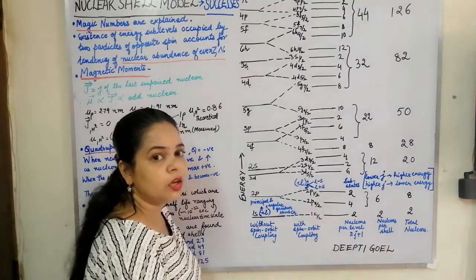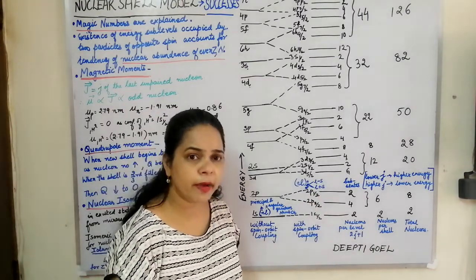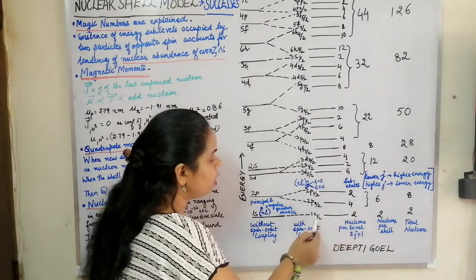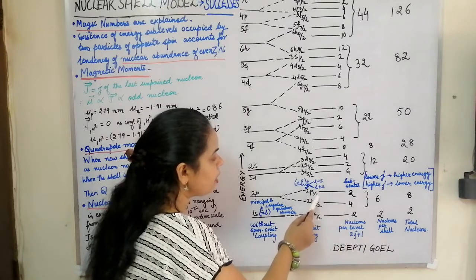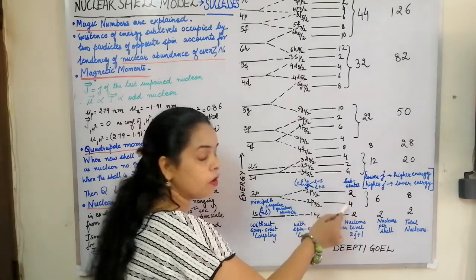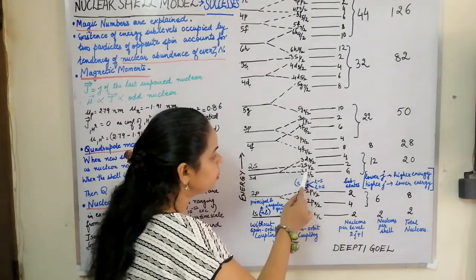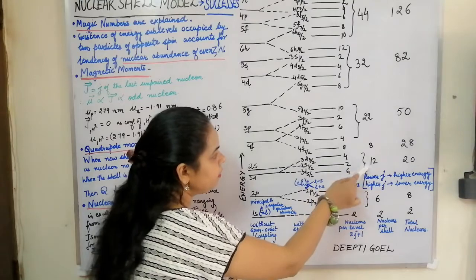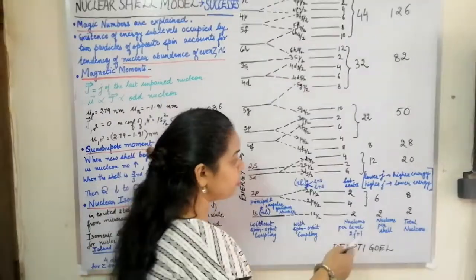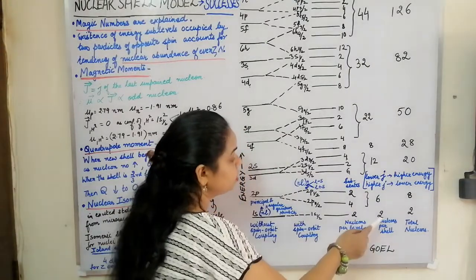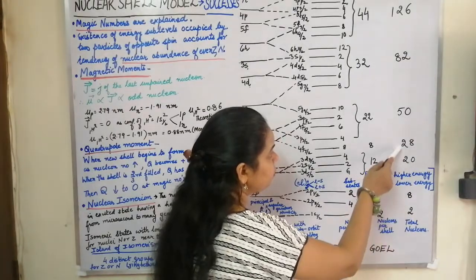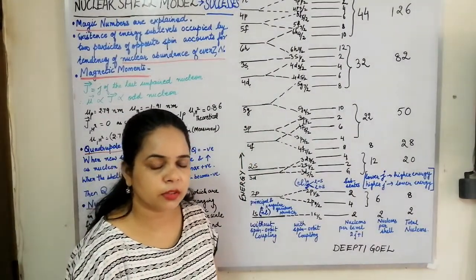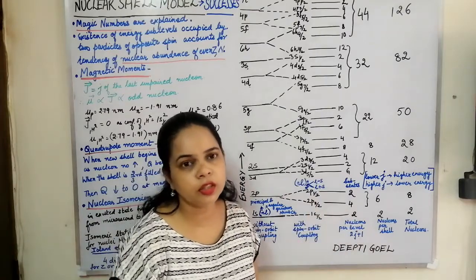Since these states are occupied by two nucleons with opposite spins, the number of nucleons per level is 2J+1, equal to L+1. For S it is 2, for P there will be 4, and for 2P½ there will be 2, so that the P level has a total of 6 nucleons. The D level: 3D 5/2 has 6 and 3D 3/2 has 4, giving a total of 12. The cumulative totals are 2, 8, 20, 28, 50, 82, and 126 — the magic numbers, very successfully explained by the nuclear shell model.